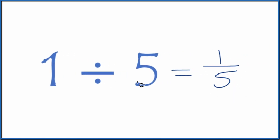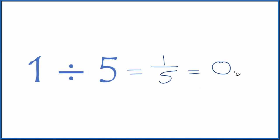You could also divide one by five on a calculator. One divided by five, that gives you 0.2. So one divided by five, we get a fraction one-fifth or a decimal 0.2.